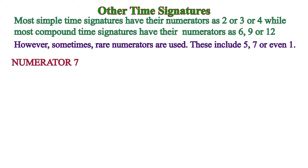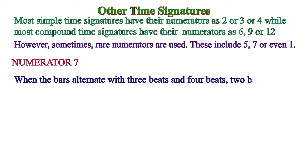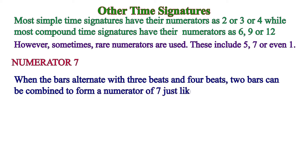It is also possible to have numerator seven. When you have alternating bars of three beats and four beats — for instance, 3/4 then 4/4, then 3/4 then 4/4 — you add two of those bars together to make 7/4. When the bars alternate in threes and fours, two bars are combined to form seven.